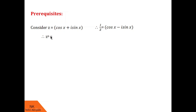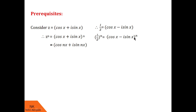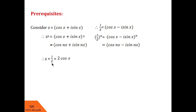Similarly, z raised to n is given by cos x plus i sin x raised to n, and by De Moivre's theorem it equals cos nx plus i sin nx. On the other hand, 1 by z raised to n equals cos x minus i sin x raised to n, and by De Moivre's theorem it equals cos nx minus i sin nx. Now, adding z and 1 by z: i sin x and minus i sin x cancel, leaving 2 cos x. So z plus 1 by z is 2 cos x. Similarly, z minus 1 by z is 2i sin x.